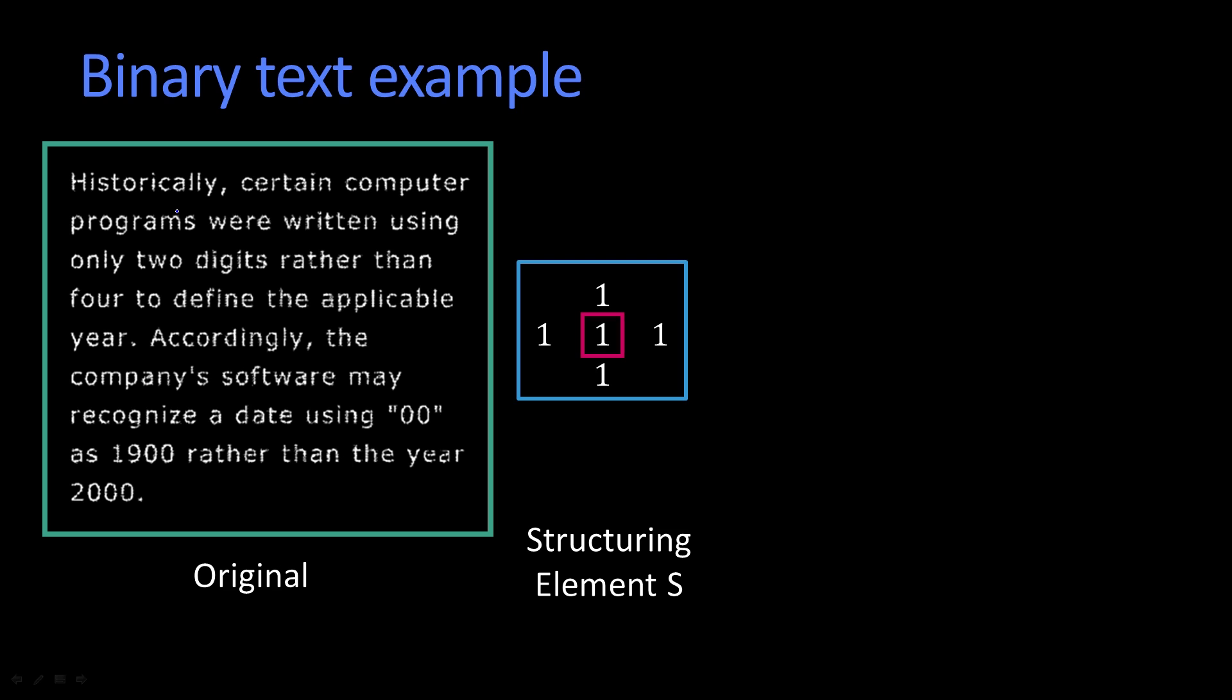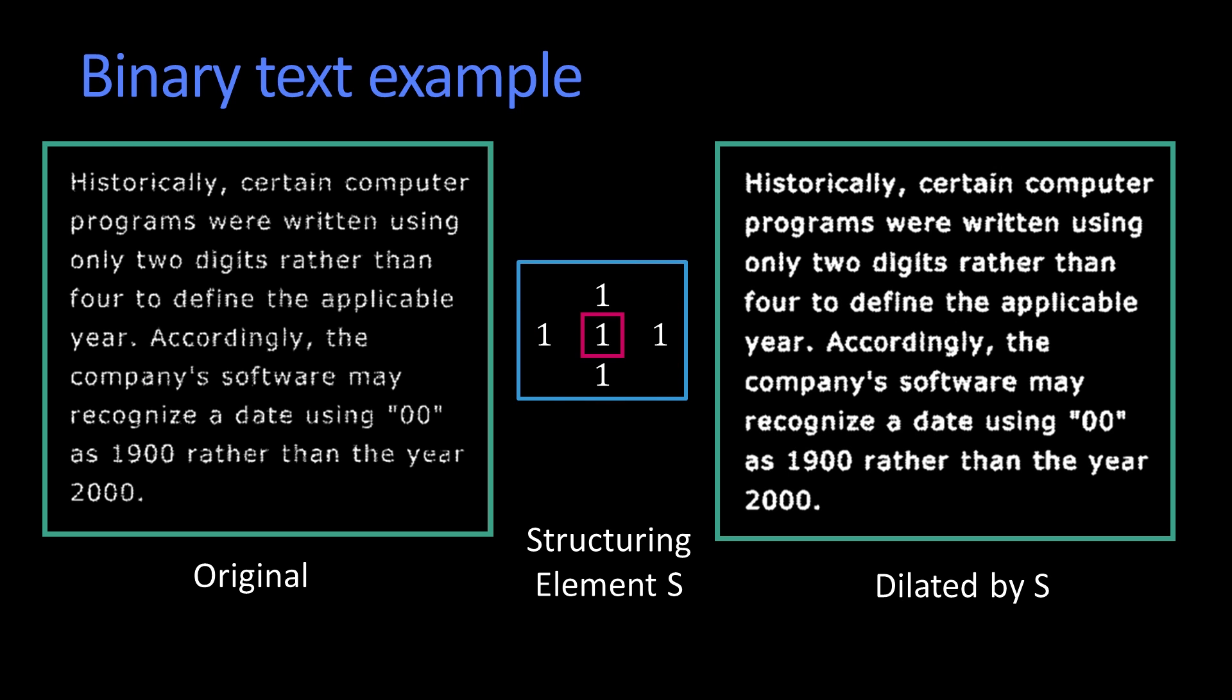So if I use a structuring element that looks like this, that essentially says if I touch anybody to my right, left, upper, or below, I want to turn on the pixel. And when I do that, you get a much better result. It's much easier to read the one on the left than the one on the right. The one on the right might be uglier because it doesn't look so crisp, but there's no question about reading it.